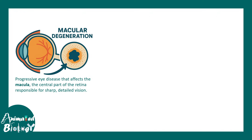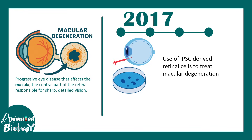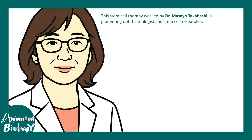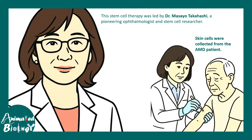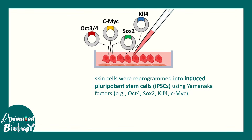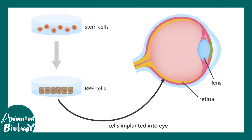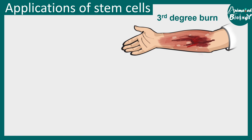Macular degeneration affects the central part of the retina, known as the macula, and generally occurs in older populations. In 2017, the first iPSC-derived retinal cells were transplanted into patients with macular degeneration by Masao Takahashi, a pioneering ophthalmologist and clinical stem cell researcher. She took skin biopsies from AMD patients, converted them into iPSCs using Yamanaka factors, grew retinal pigmented epithelium (RPE) cells from those iPSCs, and injected the RPEs into the retina of a patient — who was actually cured.